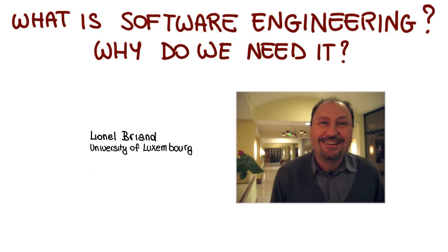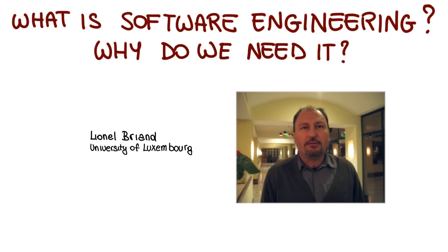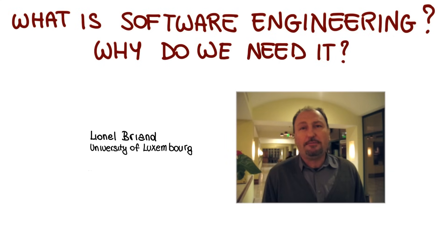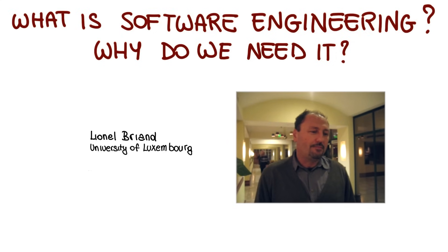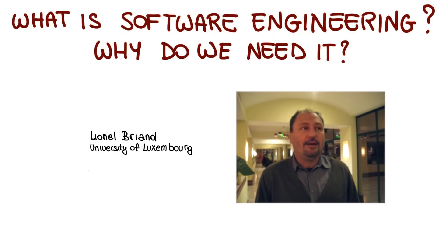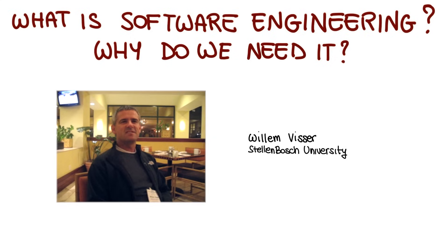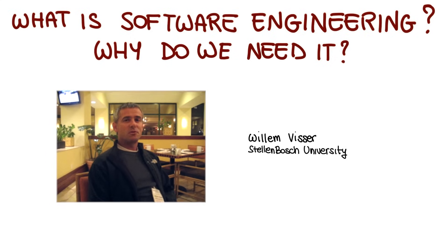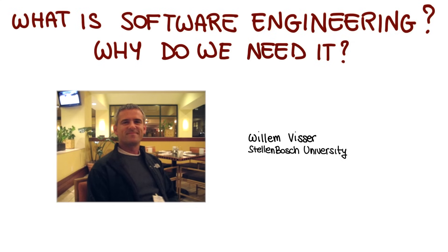Can't we just get that by sitting down and writing software? Well, you could if software were small and simple enough to be developed by one or two people. But software development now is distributed — it involves teams of people with different backgrounds who have to communicate, as well as customers, clients, users, hardware engineers, and domain experts. So we can't simply sit down and start coding. Software engineering is mostly being able to program and put big systems together so that they actually work.